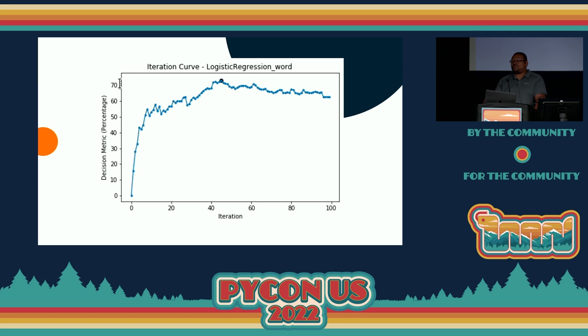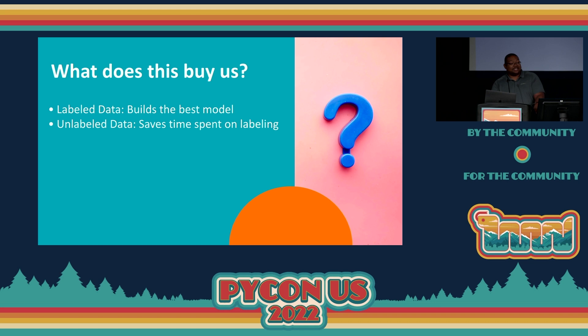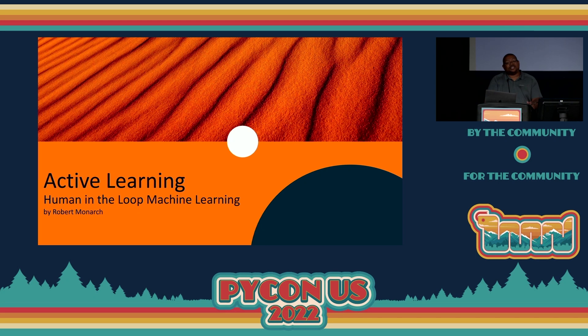What does this actually mean in the real world? I'm probably going to run this process about 100 times, every time adding extra data onto my dataset. What each dot represents is a newly trained model, so my performance metric will improve, and at some point it will actually top out. After that, as I add more data, I'm actually going to get worse performing models. So what does this end up buying us? First, if I have a labeled dataset, I can actually build the best model possible — which probably isn't the one that uses all of my data. If I have an unlabeled dataset, I can save a lot of time in labeling because I don't need to label the entire dataset. And I can reduce the bias in the model with this approach.